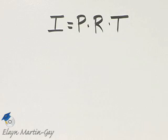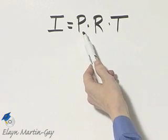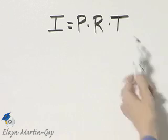For this example, we're looking for simple interest, so remember your simple interest formula. Simple interest is equal to principal times rate times time.